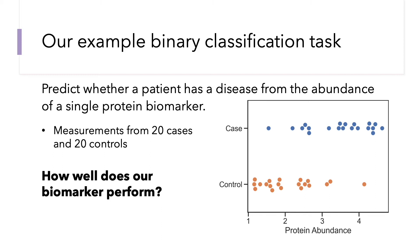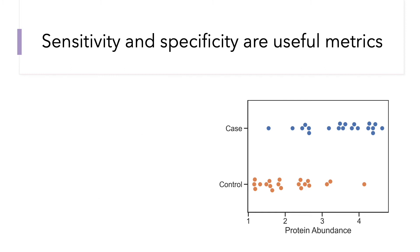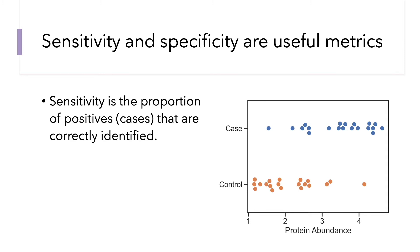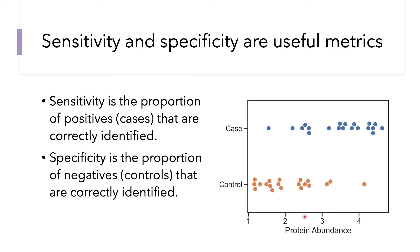The question is: how well does our biomarker perform at determining whether a patient has this particular disease or not? Sensitivity and specificity are two useful metrics we can use to begin to assess this. Sensitivity is the proportion of positives — the blue dots — that are correctly identified as cases when we threshold at some protein abundance value. Specificity is the opposite: the proportion of negatives or control samples that are correctly identified as negatives, again when we threshold at some protein abundance level.